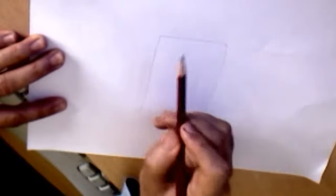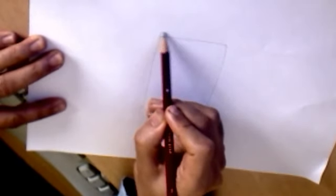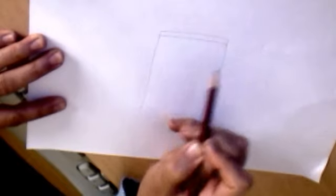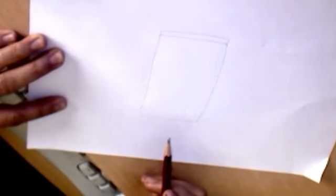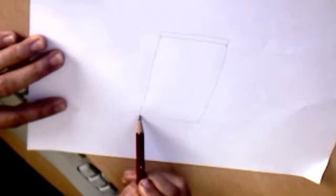First of all you draw a rectangle like that, then add a little fringe at the top and bottom, so it's like a packet of crisps.